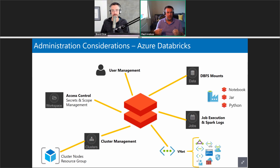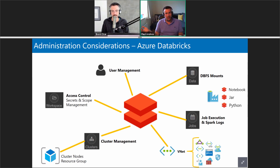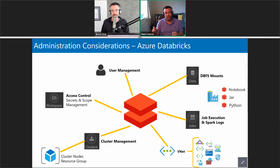As Daniel mentioned, you have a quota of CPU cores for virtual machines in Azure. If you say you want a cluster that auto-scales to 10 nodes, each with four cores, you can quickly hit the default CPU quota limit in your Azure subscription — it depends on the CPU type and region you're running in. That's an admin consideration.